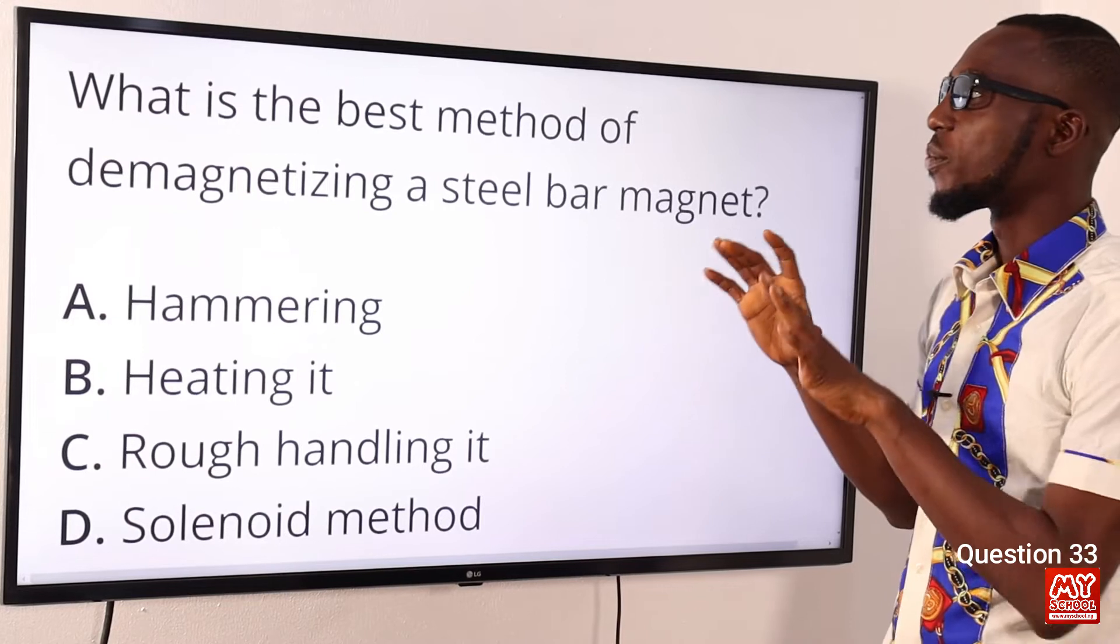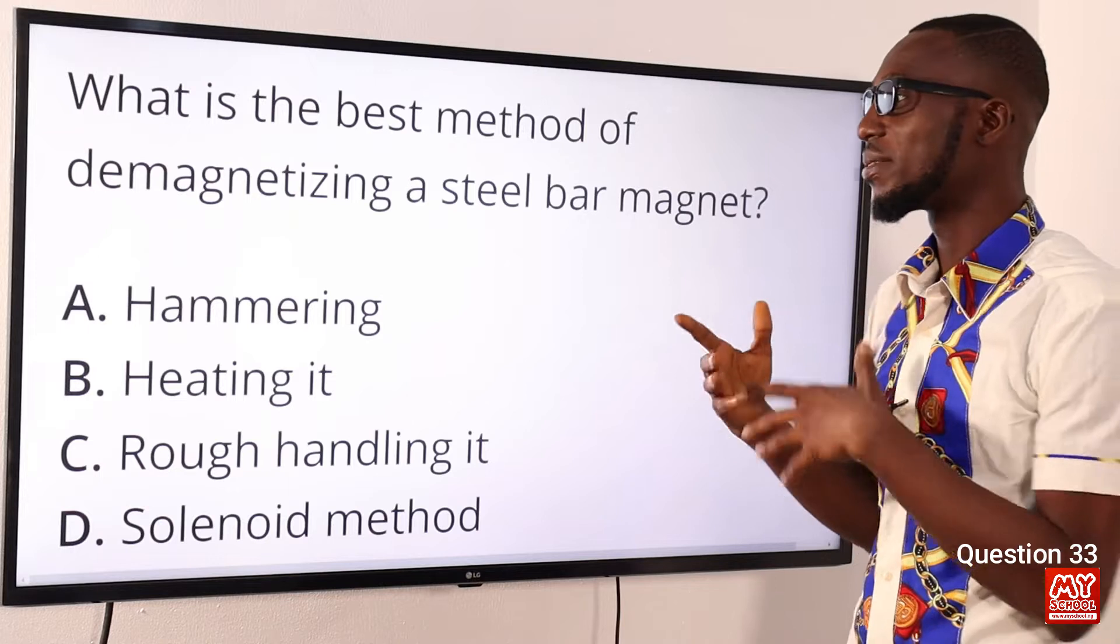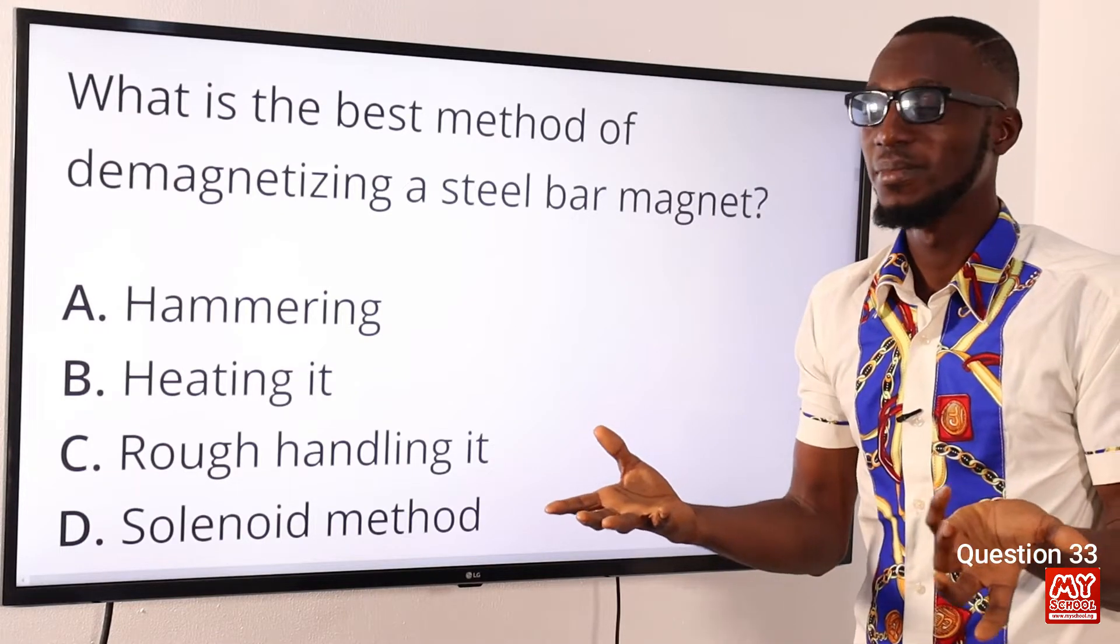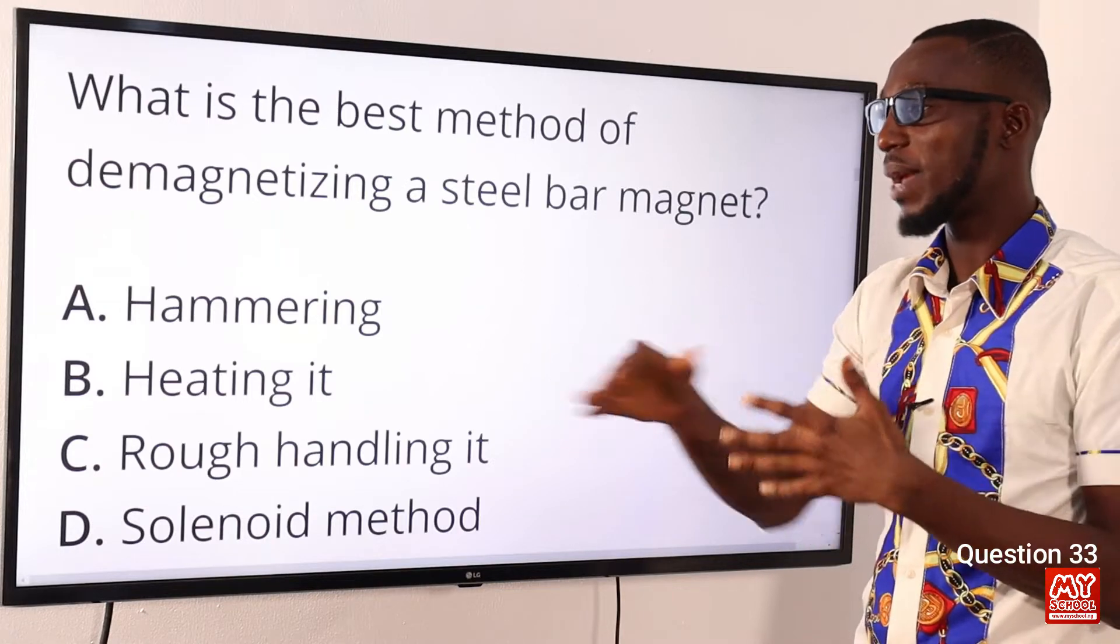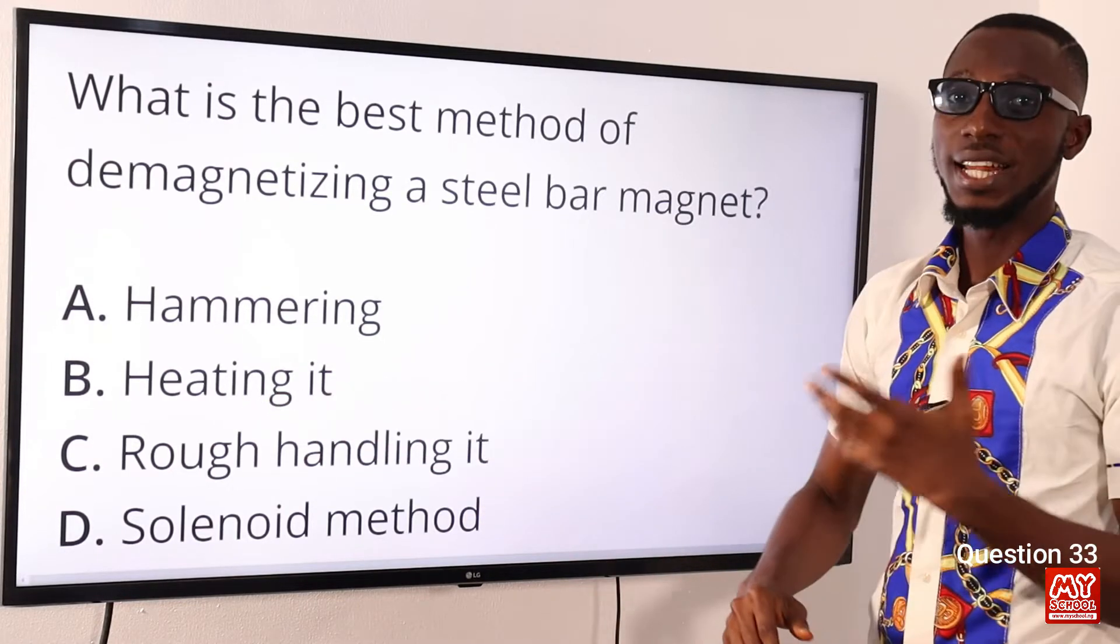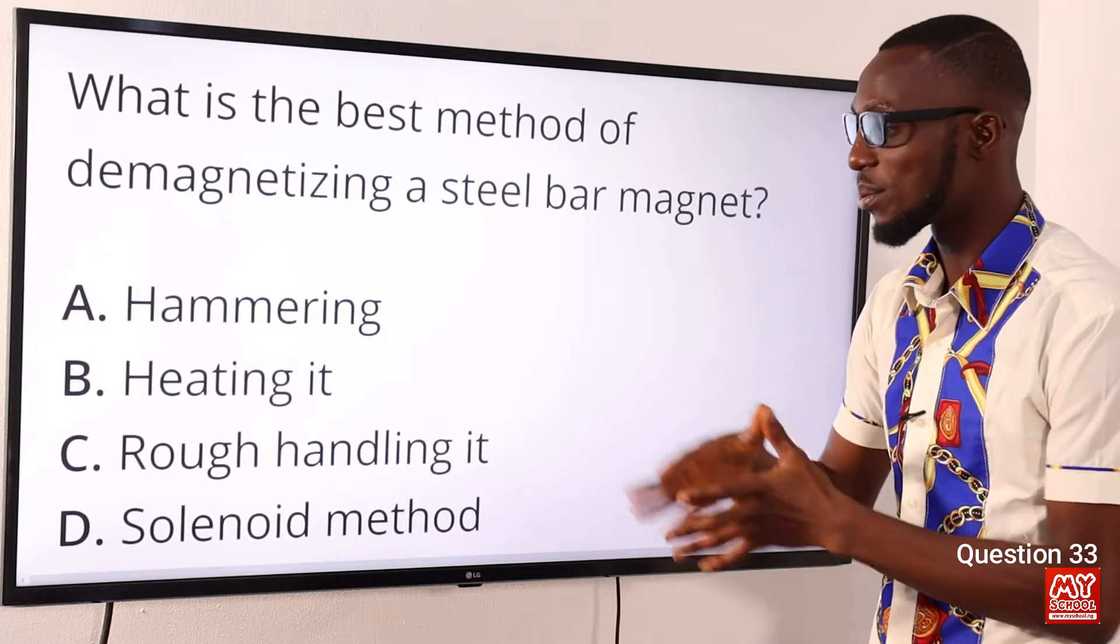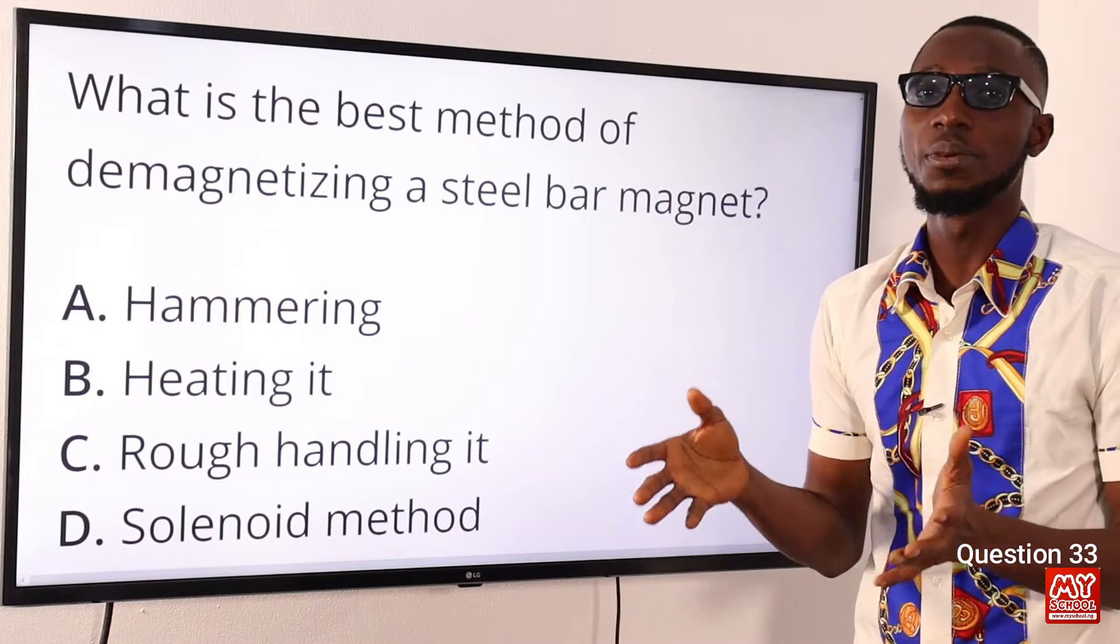Number 33. What is the best method of demagnetizing a steel bar magnet? So, when you talk about demagnetizing a steel bar magnet, you are actually making the magnet lose its magnetism. We have three methods, at least I am going to mention here. We have the mechanical method, which is hammering. We have the heating method. We have the electrical method, which involves the use of solenoid. This is the most efficient way of demagnetizing a magnet. So, the correct option here is option D for the solenoid method or electrical method.